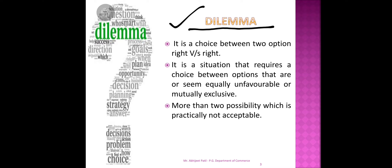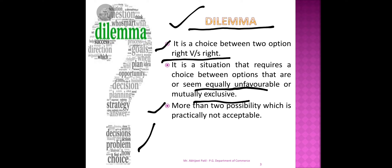When we hear the word 'dilemma,' a question arises in our mind — we are getting confusion. Dilemma is nothing but a situation. It is a choice between two options — right versus right. When a dilemma arises, there is a choice between right versus right, or it is a situation that requires a choice between options that are or seem equally unfavorable or mutually exclusive — more than two possibilities which are practically not acceptable.